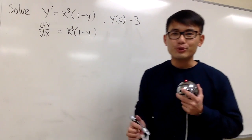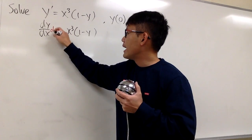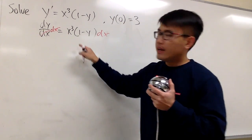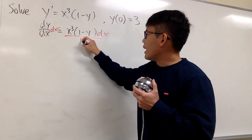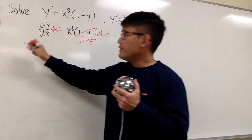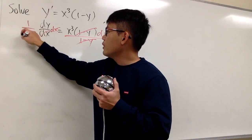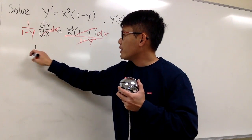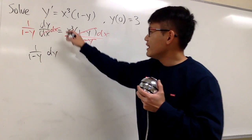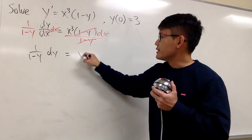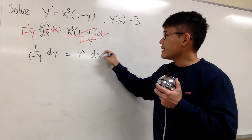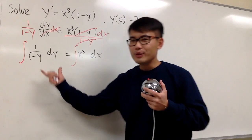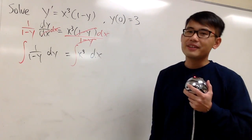Now let's go ahead and do our usual business. Let's multiply by dx on both sides so we cancel, and we are going to divide by 1 minus y on both sides. On the left-hand side, I will put this as 1 over 1 minus y. So we have 1 over 1 minus y dy on the left-hand side, and this is equal to x to the third power dx. Now we can integrate — all the y's are together now, all the x's are together now.